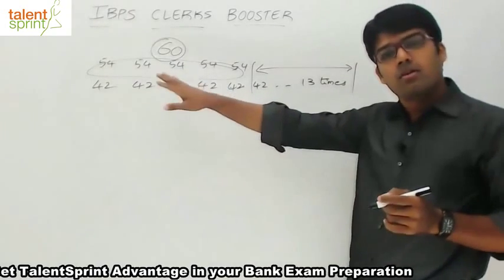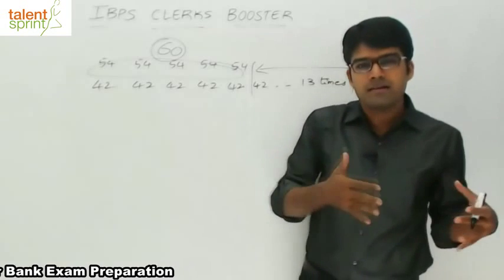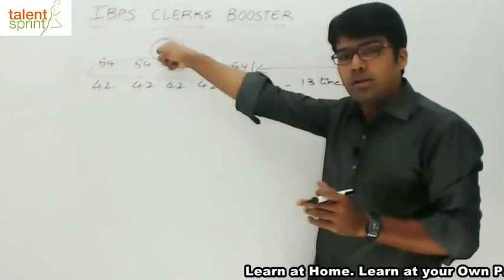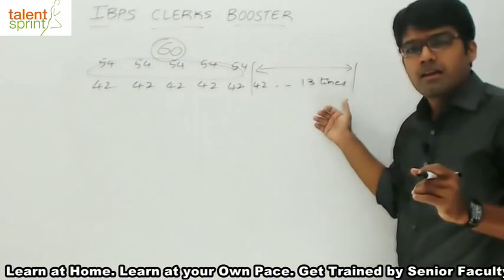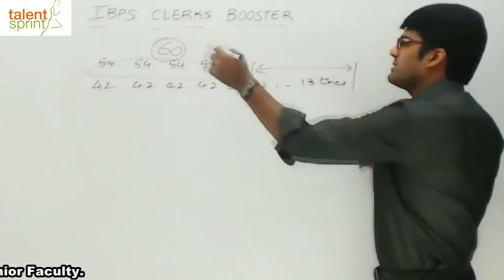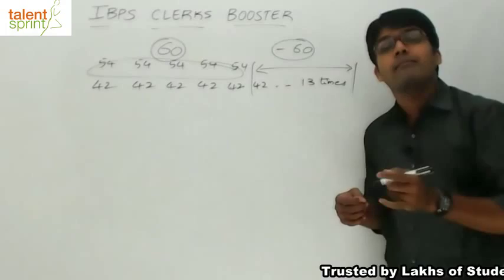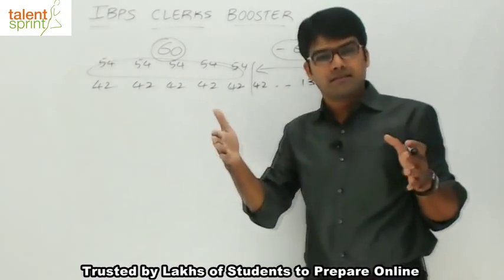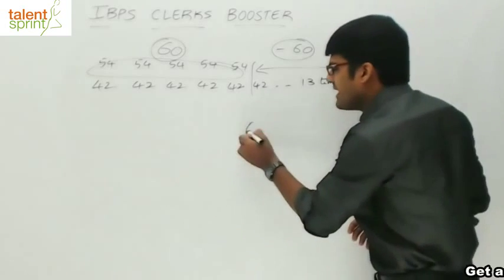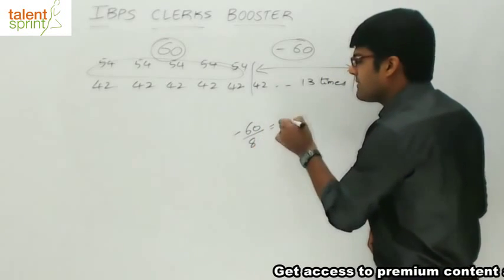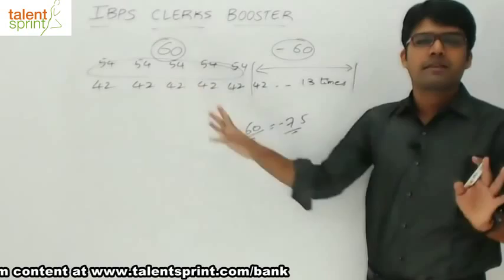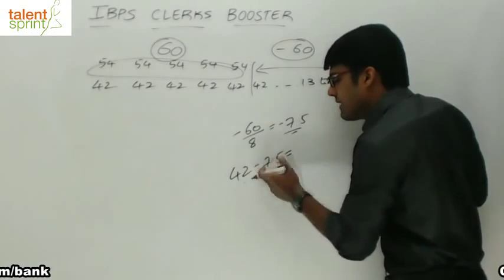Total 60 is already extra in the first 5 matches. This is like balancing your monthly budget — if you have already spent more on one area, you have to reduce your expenditure on the other part. So I have already spent 60 more here, so I should reduce my total by 60 here. This 60 should be distributed equally among the remaining 8 matches — so minus 60 divided by 8 equals minus 7.5. So it should actually be 42, but everyone has lost 7.5 runs because the first 5 matches took more. So 42 minus 7.5 equals 34.5.